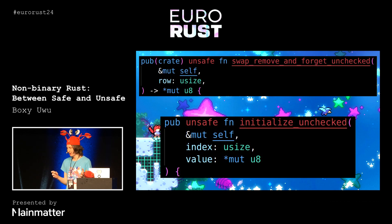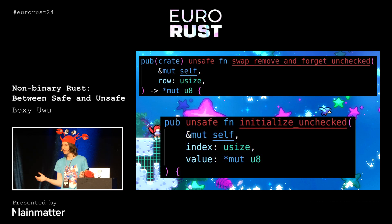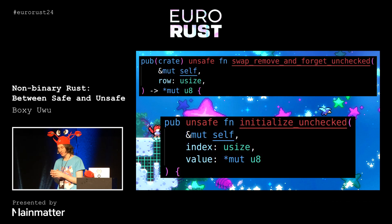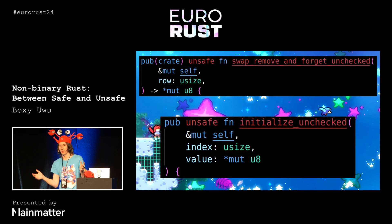We are passing in logical ownership of the value, but the actual place where the data is stored is the responsibility of somebody else — maybe the value is on the stack somewhere, maybe it's in another one of these vecs somewhere.